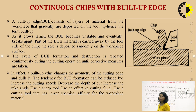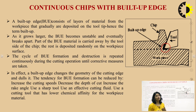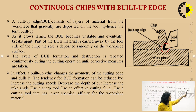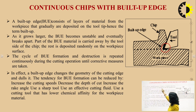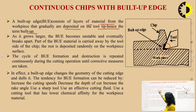Next is the continuous chip with built-up edge (BUE). A built-up edge is a false cutting edge that forms on the tool tip. It consists of layers of material from the workpiece that are gradually deposited on the tool tip — hence the term 'built-up.' As it grows larger, the built-up edge becomes unstable and eventually breaks apart. Part of the BUE material is carried away with the chip, and the rest is deposited randomly on the machined surface.